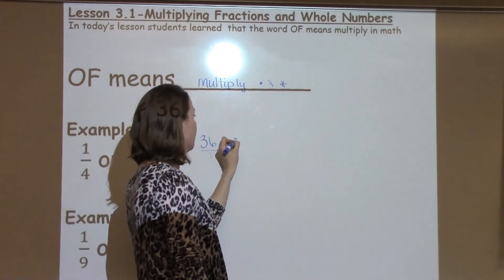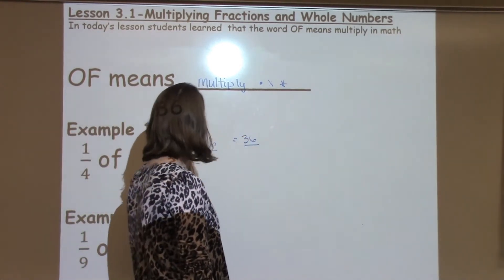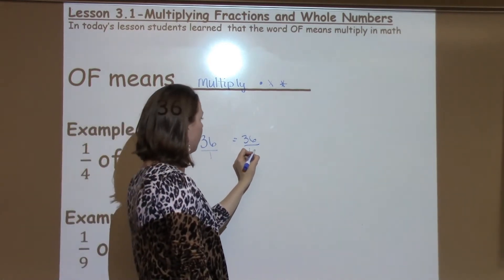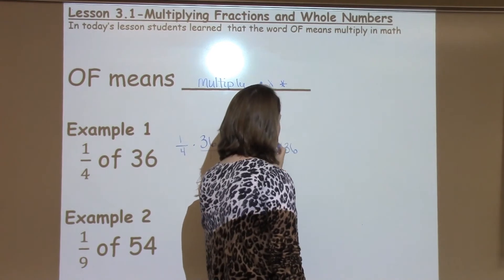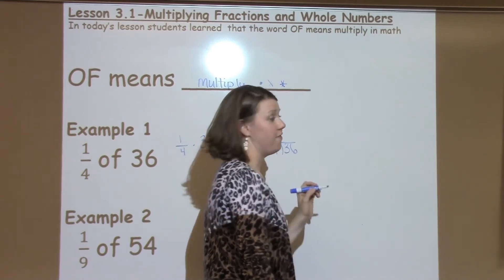1 times 36 is 36. 4 times 1 is 4. Now I'm just going to solve this problem, so I'm going to take 36 divided by 4, which I know is a fact.